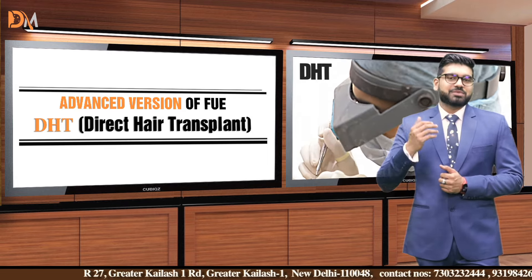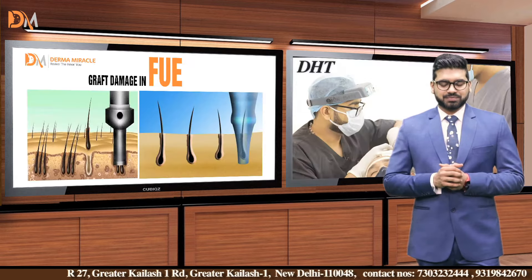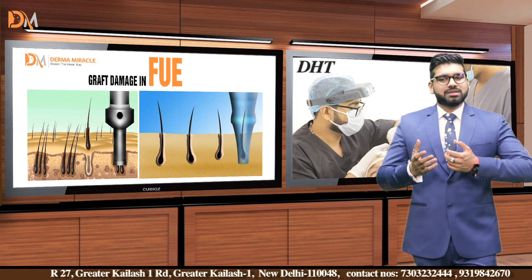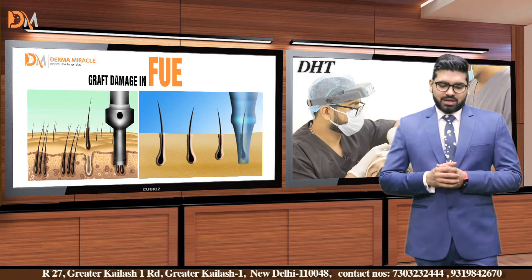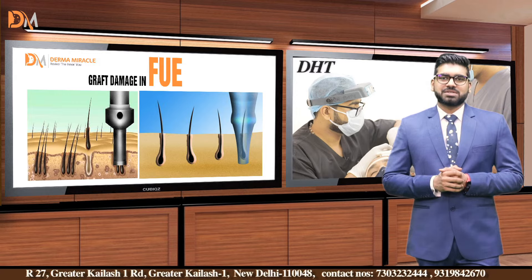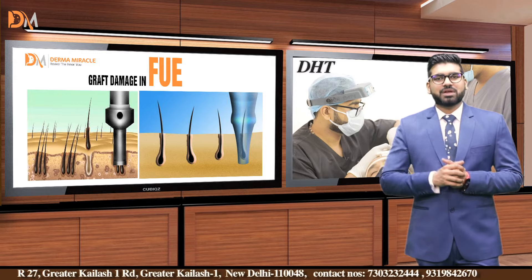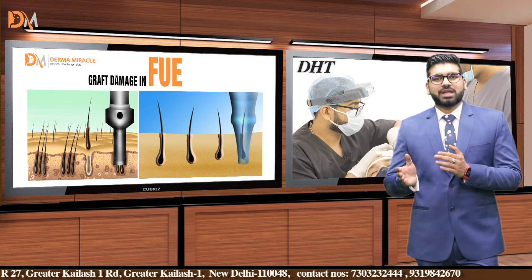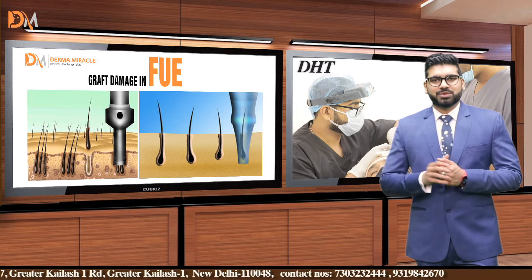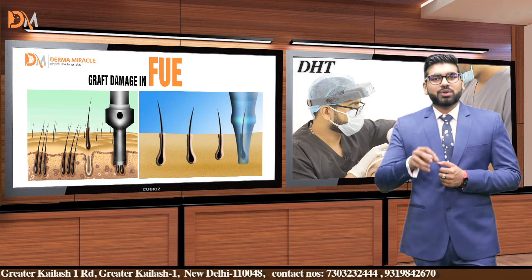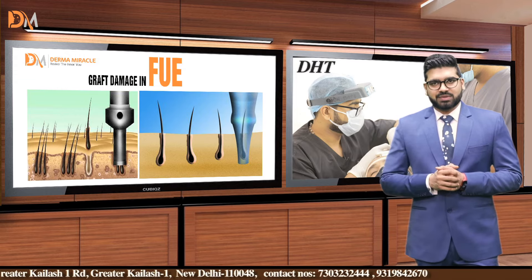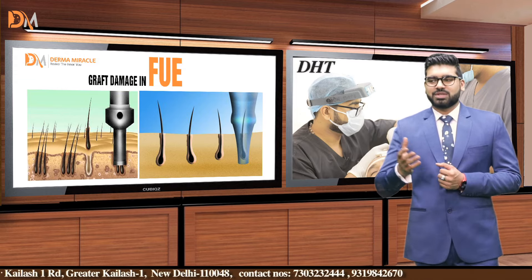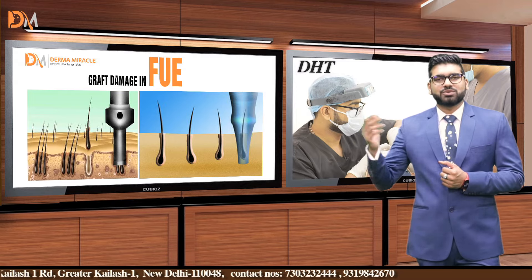DHT is a method in which we control graft damage. As you all know, FUE is a blind technique. Blind in the sense that during punch excision and graft harvesting, if the direction is off by 1-5 degrees, it can damage the whole root. Sometimes there are multiple roots — two, three, or four roots.